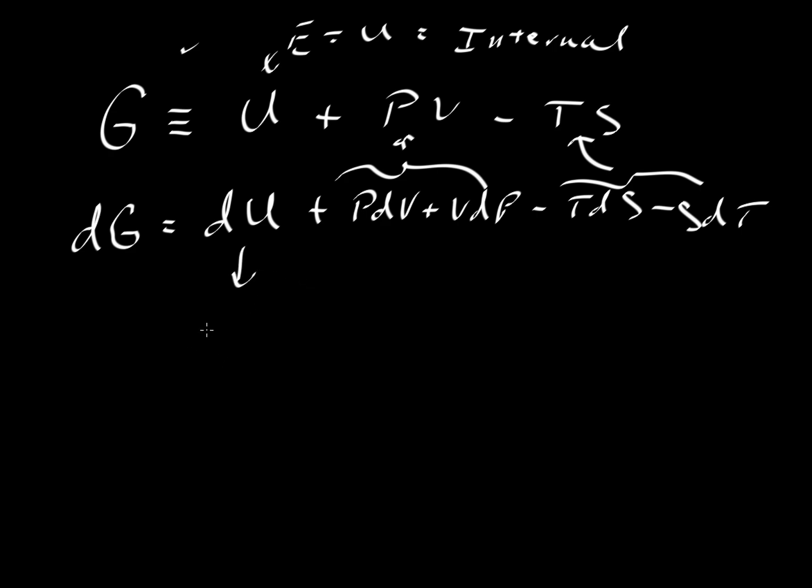But we have already shown that dU is equal to TdS minus PdV. And now you can see why we use the engineering convention of work done by the system. That positive PdV will cancel out with that minus PdV. This positive TdS cancels out with that minus TdS. And so we end up with dG equals VdP minus SdT.